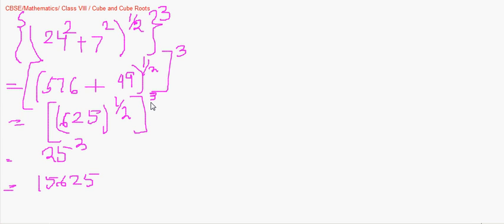For a practical application: if the volume of a cube is given as some expression in cubic centimeters or cubic meters and you need to find the side length, you find the cube root of the given volume. This is because volume of a cube equals side³, so the side equals the cube root of the volume.